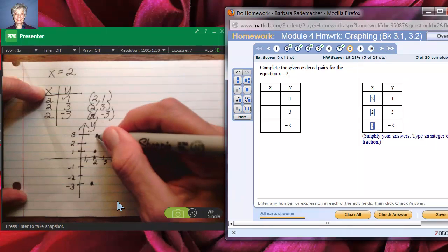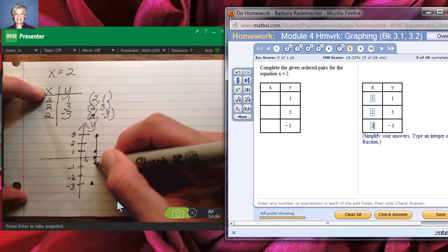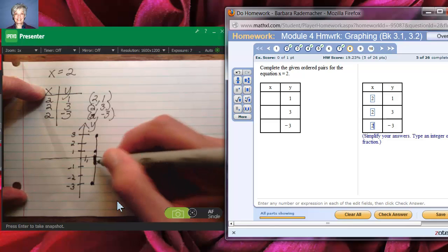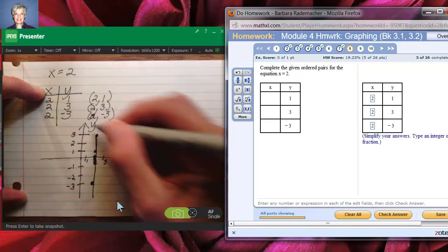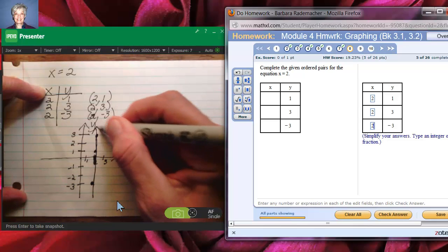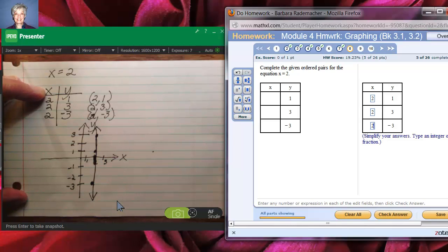And then, I would, whoops, pretend that's going through 2. I would connect the points and then bring them out a little bit and draw arrows to show that I know that lines go on forever. This is a vertical line.